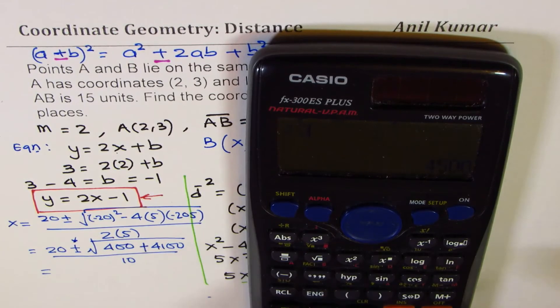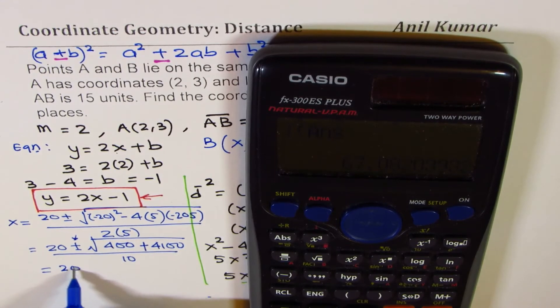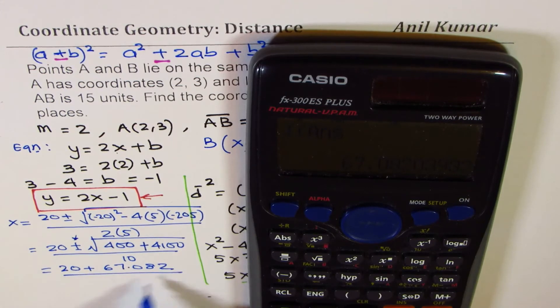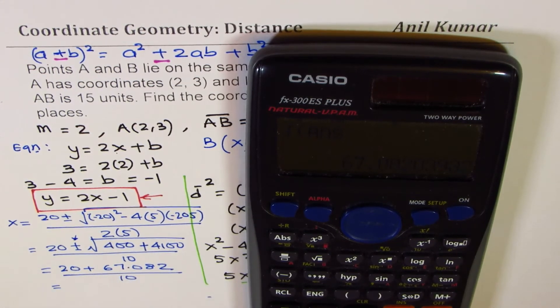To this answer, we'll add 20. So, we'll add 20 plus we have 67.082 divided by 10, right? So, we'll add this to 20 and then divide by 10 to get decimal value of 8.708.